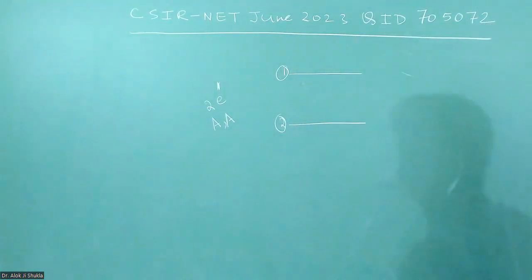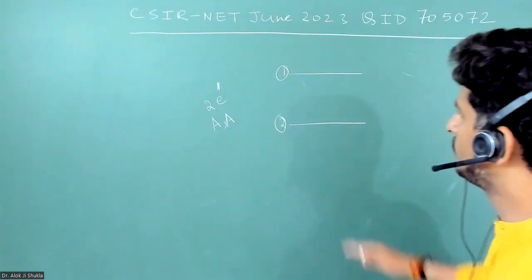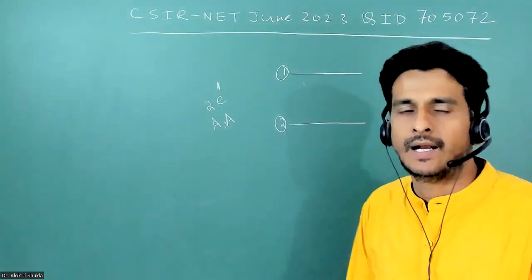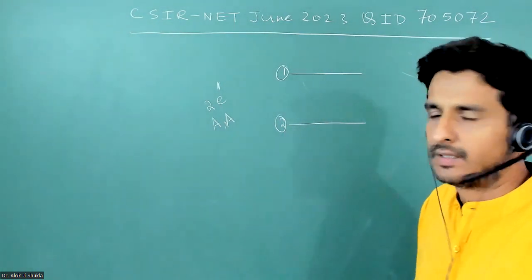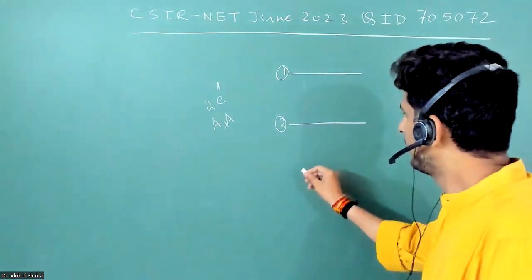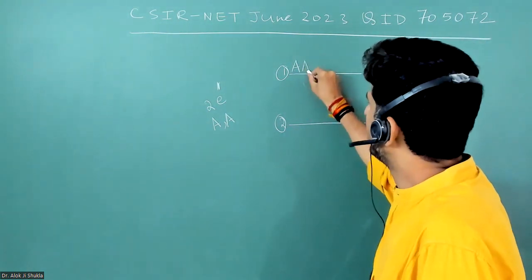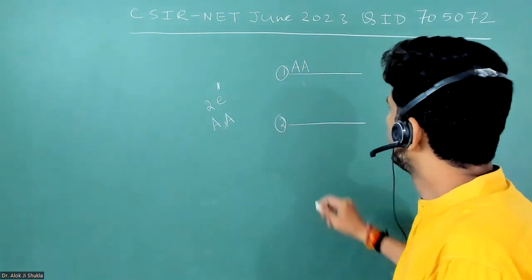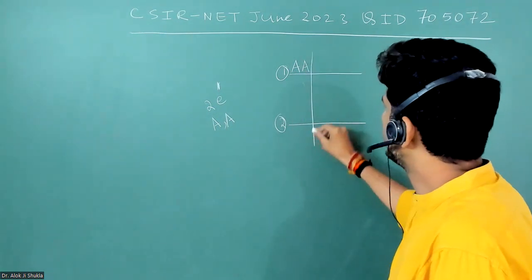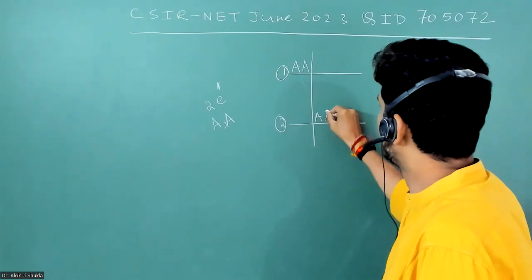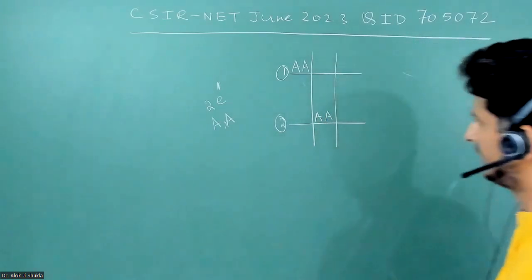Now they are to be distributed in these two sites. Suppose both of them are at one site. This is the first microstate. Both of them are at the second site. This is the second microstate.